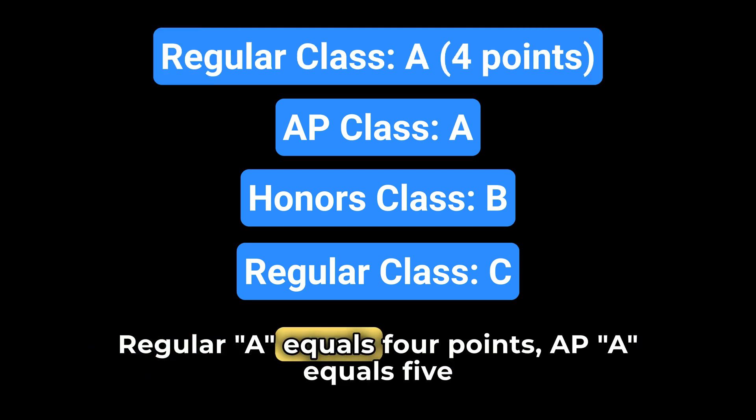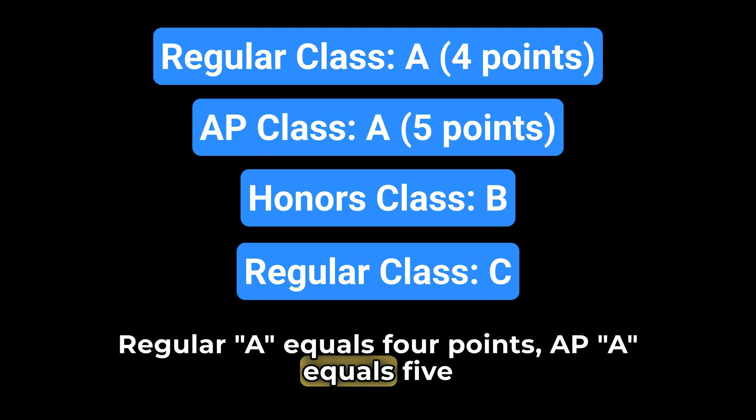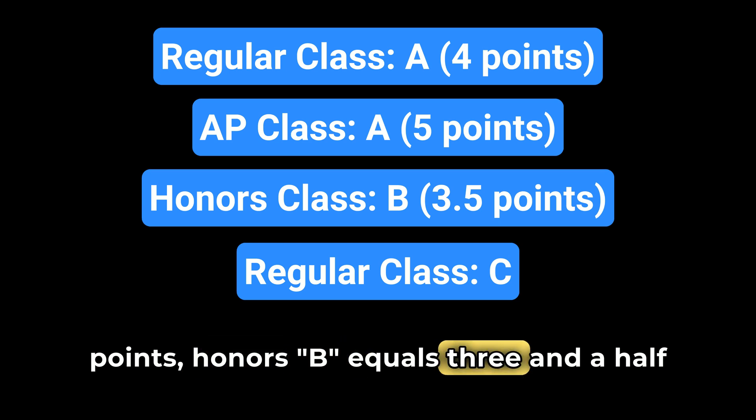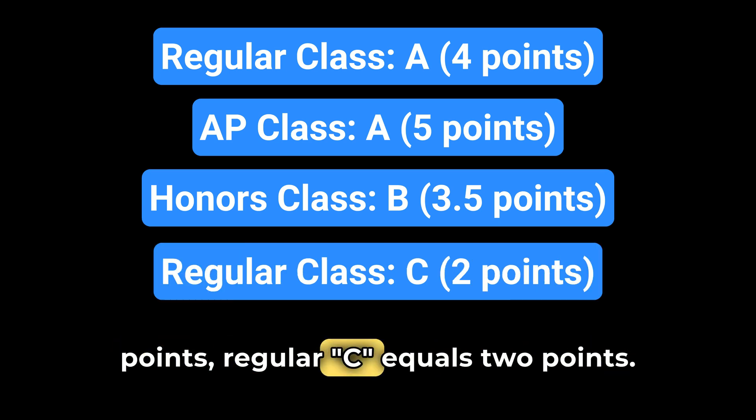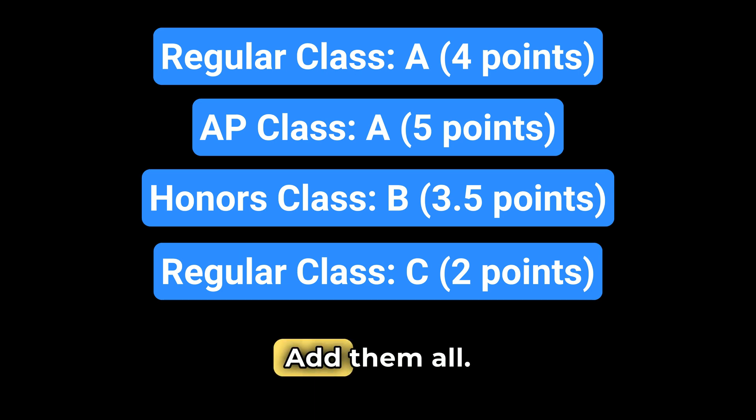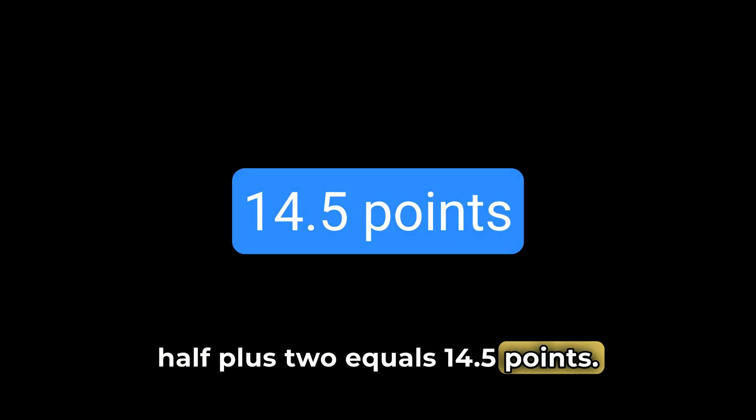Regular A equals 4 points. AP A equals 5 points. Honors B equals 3.5 points. Regular C equals 2 points. Add them all up. 4 plus 5 plus 3.5 plus 2 equals 14.5 points.